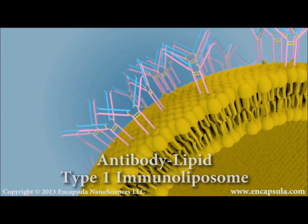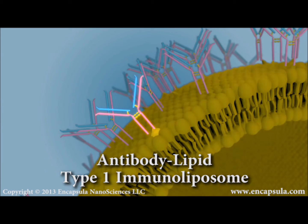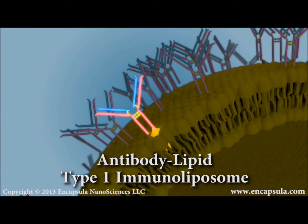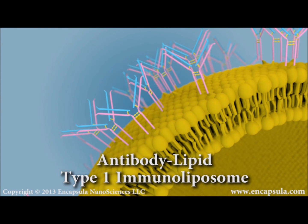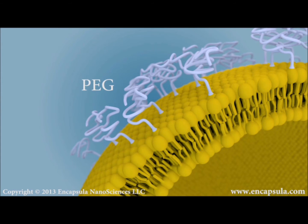Type 1 immunoliposomes are generated either by conjugating antibodies directly to lipids within the lipid bilayer of liposomes, in the presence or absence of PEG chains.